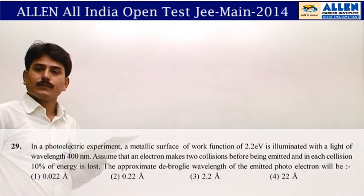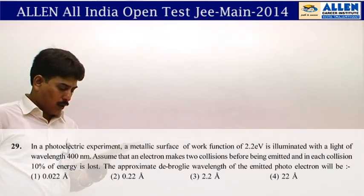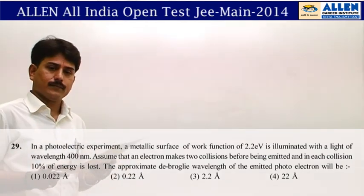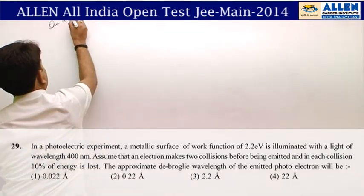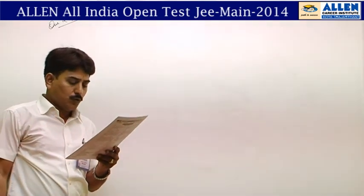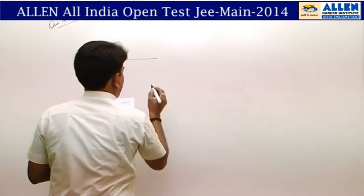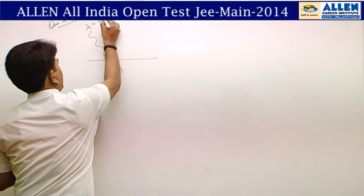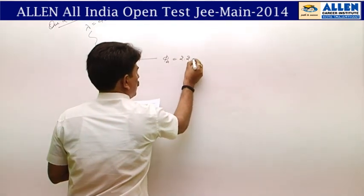Question number 29 is from dual nature of radiation and matter — photoelectric effect. In a photoelectric experiment, a metallic surface with work function 2.2 eV is illuminated with light of wavelength 400 nm.